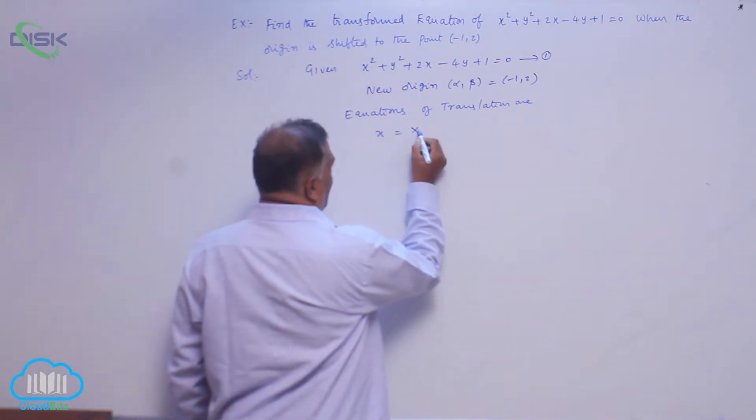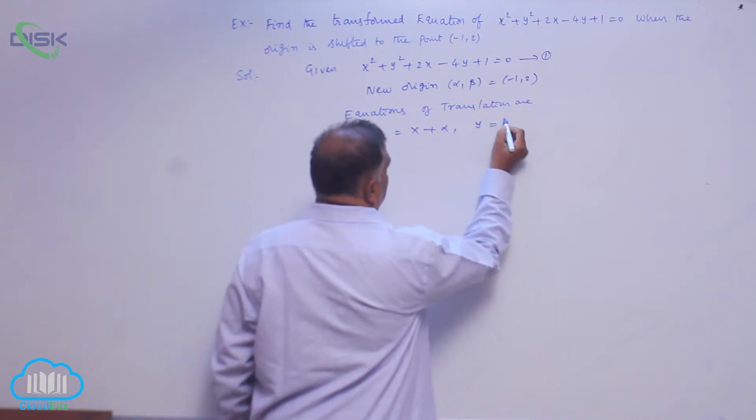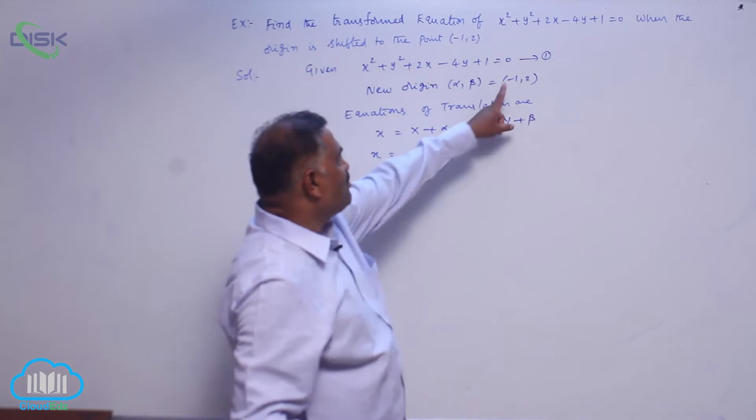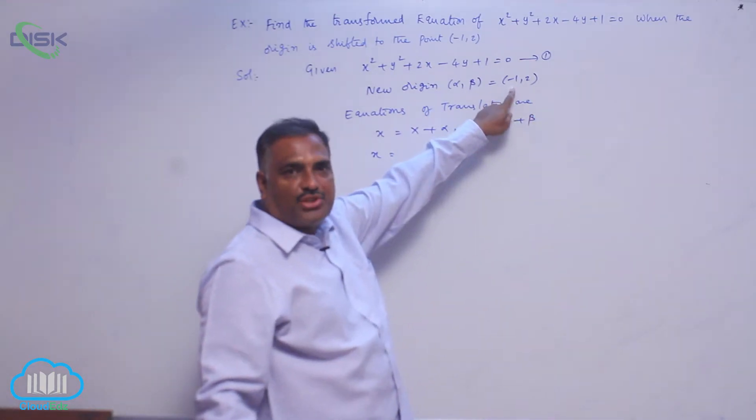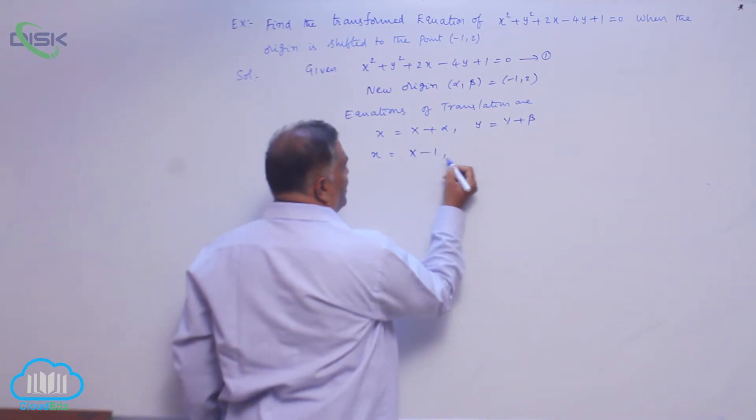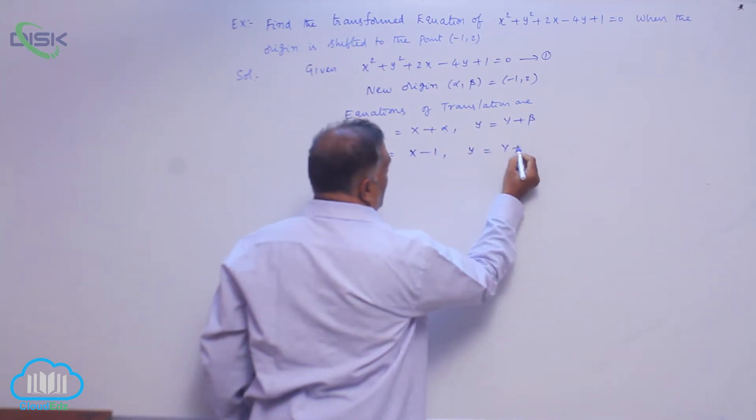x = X + α, y = Y + β. In place of (α, β), let us substitute (-1, 2). So x = X - 1, y = Y + 2.